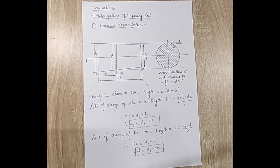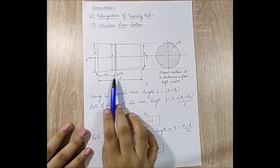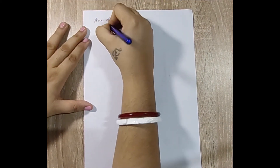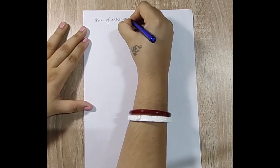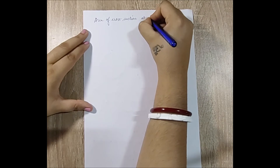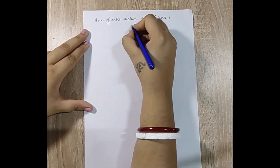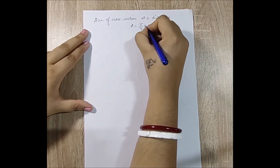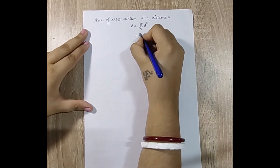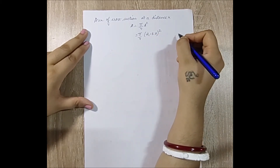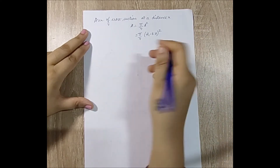At distance x, the area of the cross section is A = (π/4)·d². Since d = d1 - k·x, we have A = (π/4)·(d1 - k·x)².